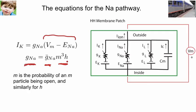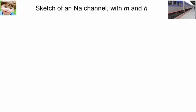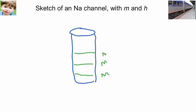So, m cubed h is again a probability, and let's see if we can make a sketch. We would say m cubed h. That means we have three particles of the m type. Also, we have one particle of the h type. Here's the inside. Here's the outside.